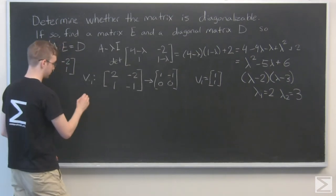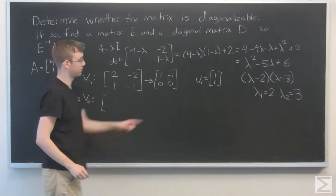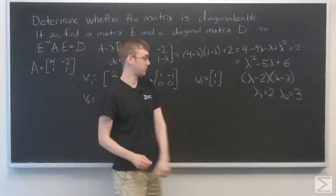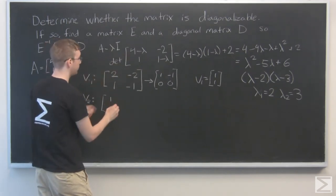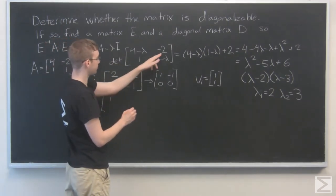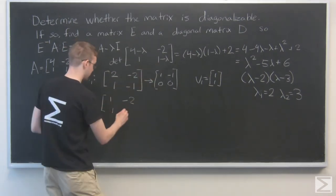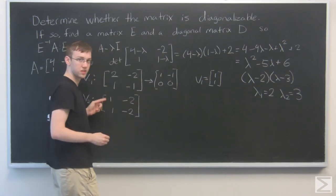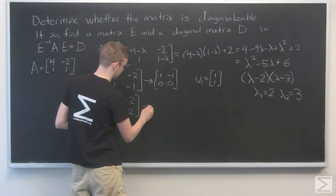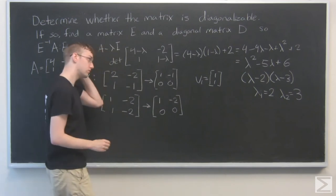Now let's find eigenvector 2. This time we're going to use eigenvalue 2, which is equal to 3, and plug it into this equation. So 4 minus 3 is 1, we have minus 2, we have 1, and 1 minus 3 is minus 2. Cool.